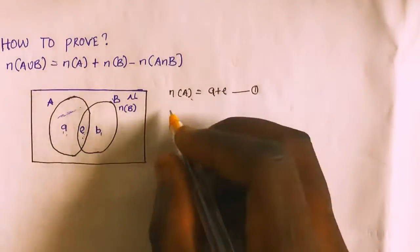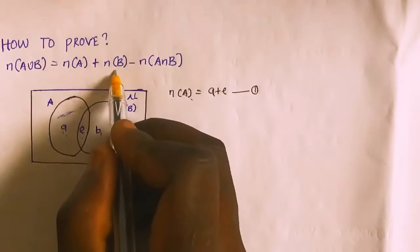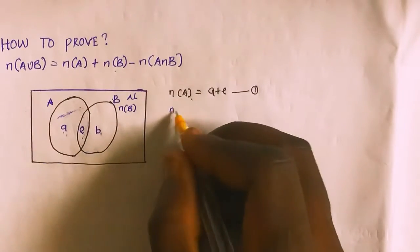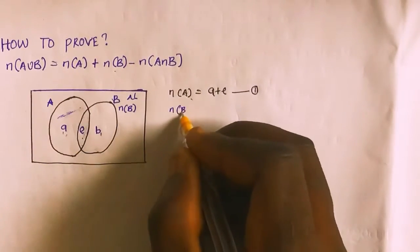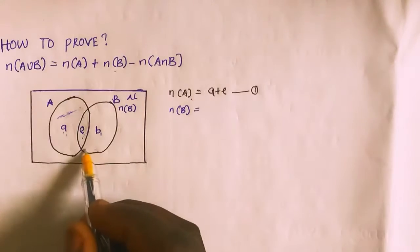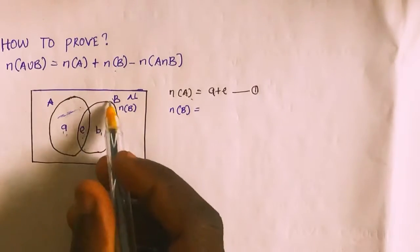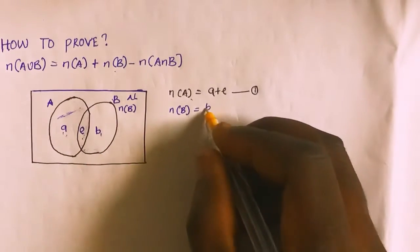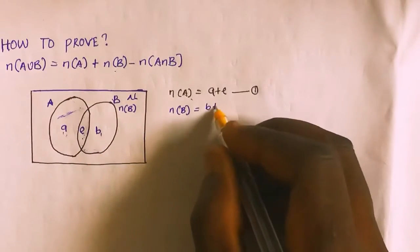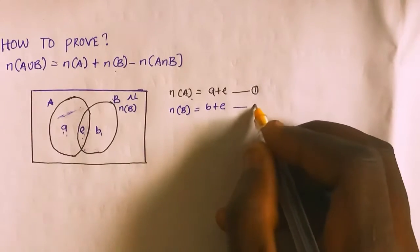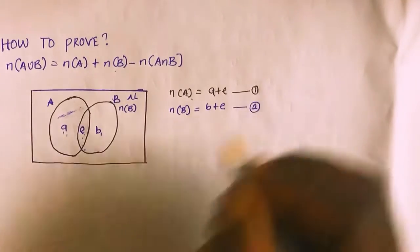Moving to the second one, I need to find my cardinality of B. Solving for cardinality of B, it will be equal to all the elements in set B, which is B plus E. I'll call this equation 2.